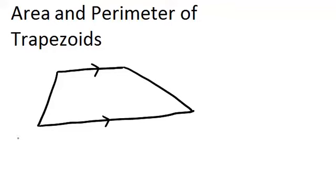Now, to find the perimeter of the trapezoid, all you need to do is add up all four sides, because the perimeter of any shape in general is the distance around the shape.